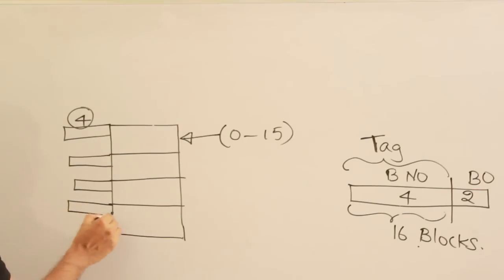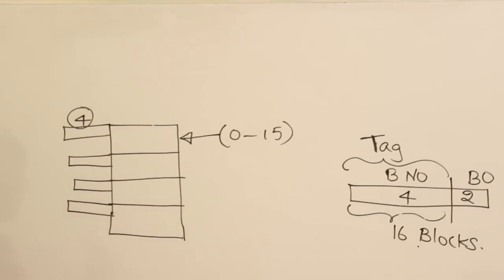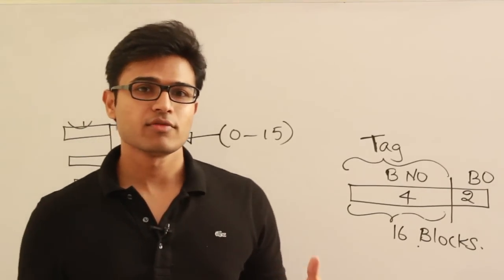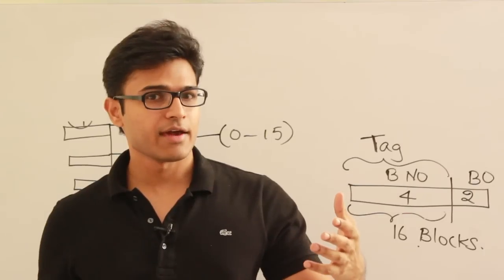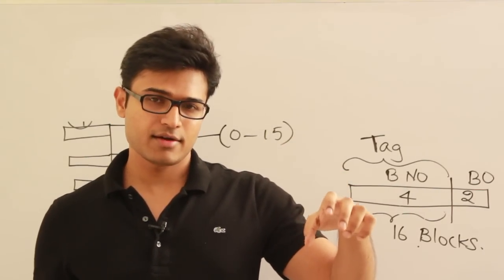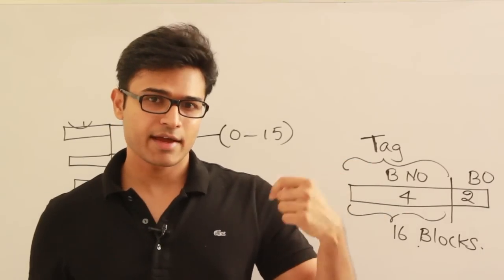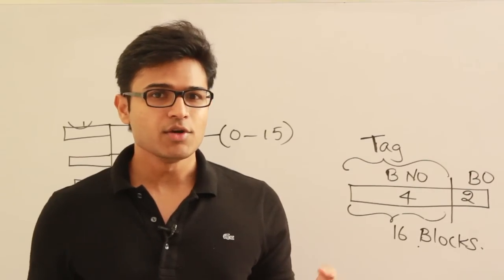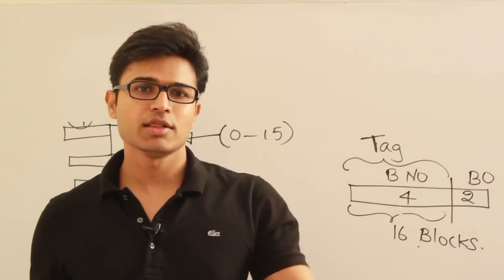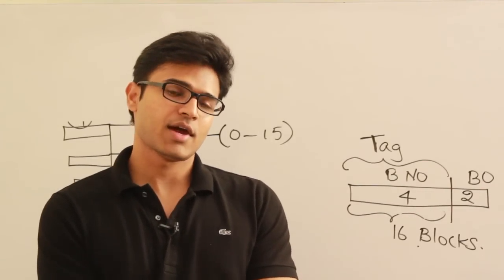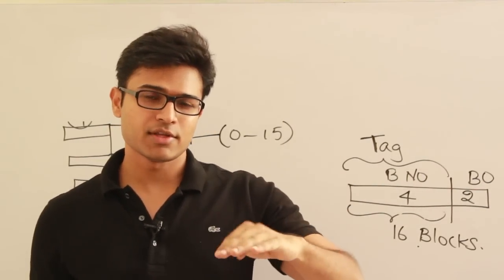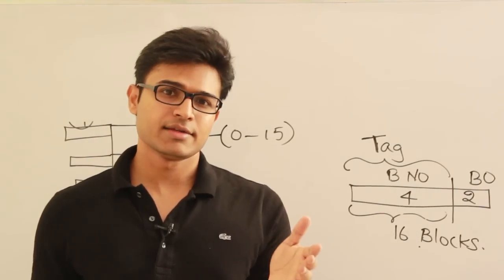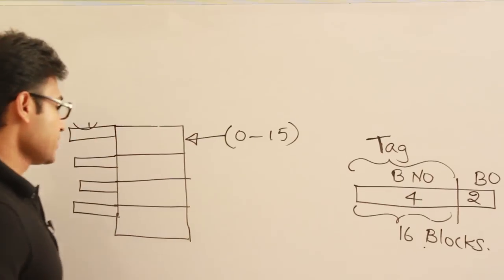The tag size has increased, which we can manage. But the main problem is: if any memory address is presented, we don't know where to search for it. Earlier in direct mapping, we used a multiplexer to select one particular tag, read only those tag bits, and used just one comparator. But now, given any physical address from the CPU, we don't know where to look — so we have to look at all tags. With one comparator, we'd have to compare them one by one, causing the hit latency to increase significantly.